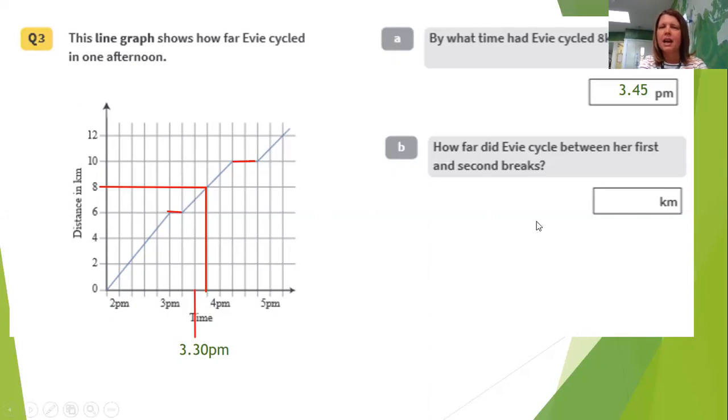How far did Evie cycle between her first and second break? And I've marked the breaks on there. You can see it's a break because she's not moving. So she's still six kilometres away from her starting point. So there's my first break and then my second break up here. So how far did she cycle between them? That's the difference there between six where she finished her first break and 10 kilometres where she started her next break. So the difference will be four kilometres.